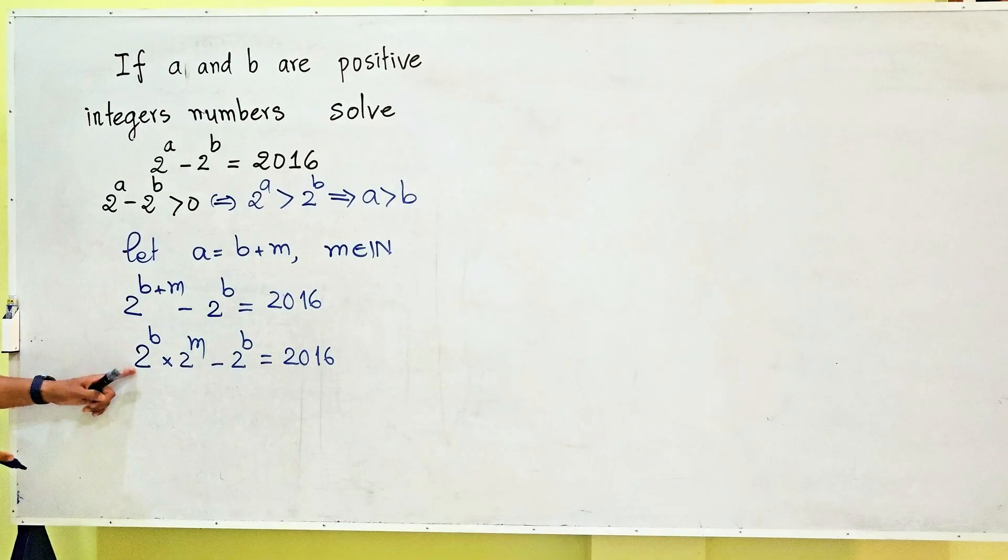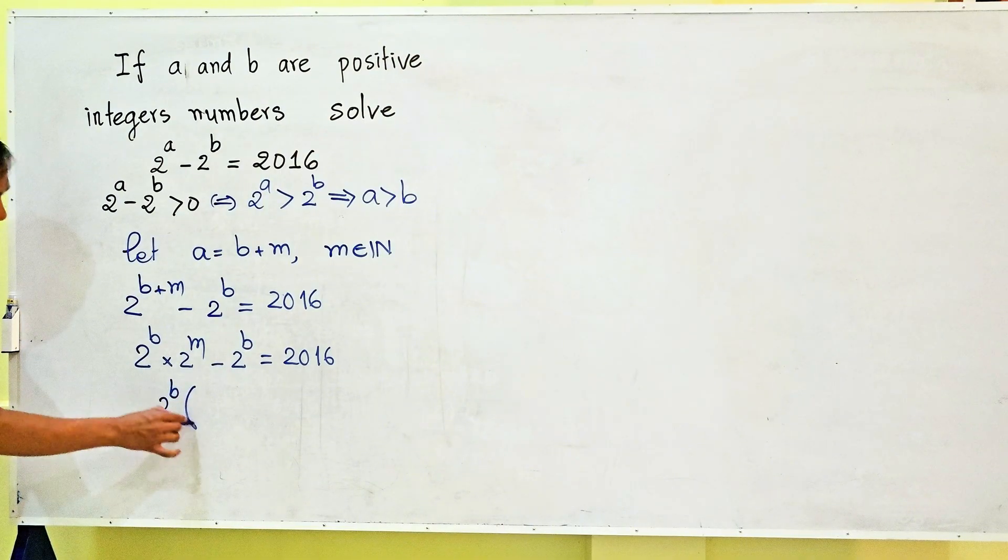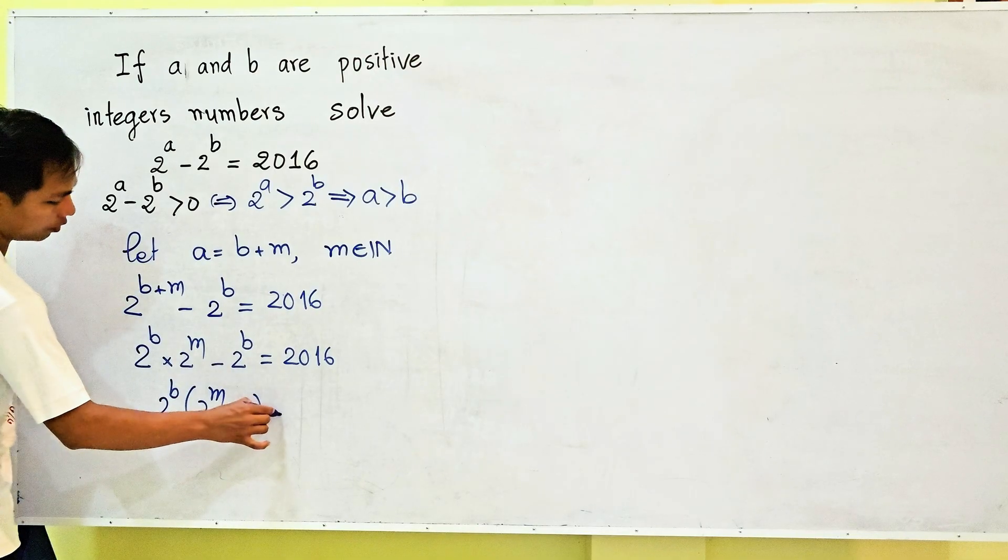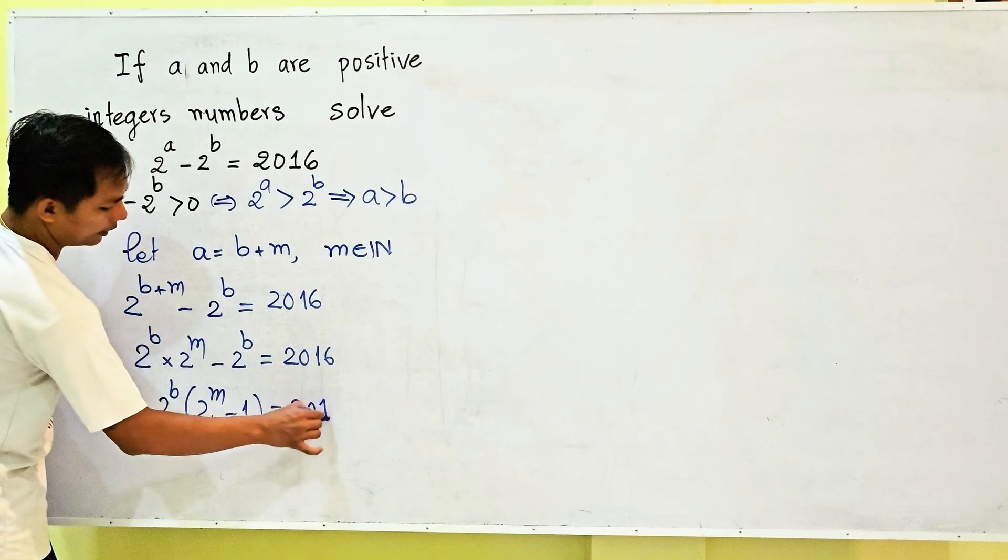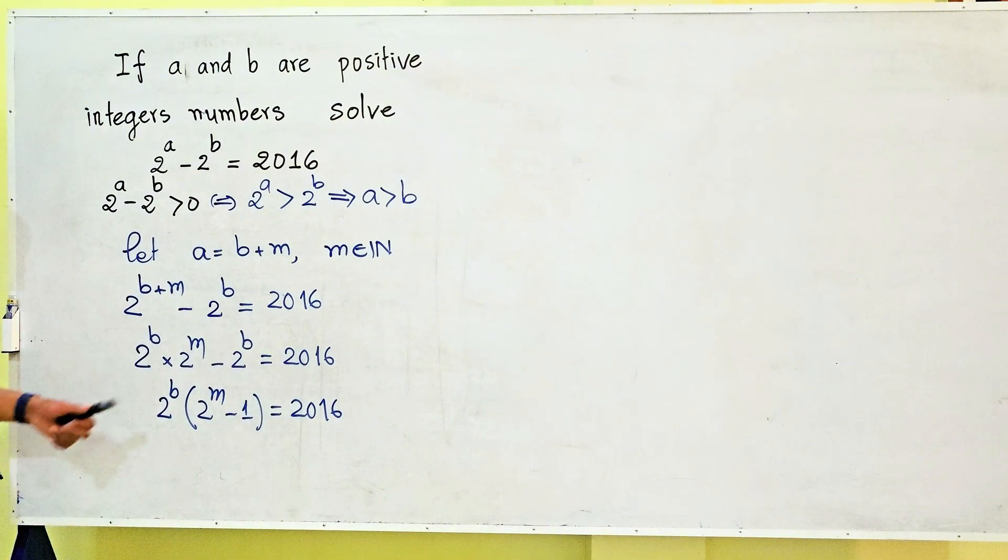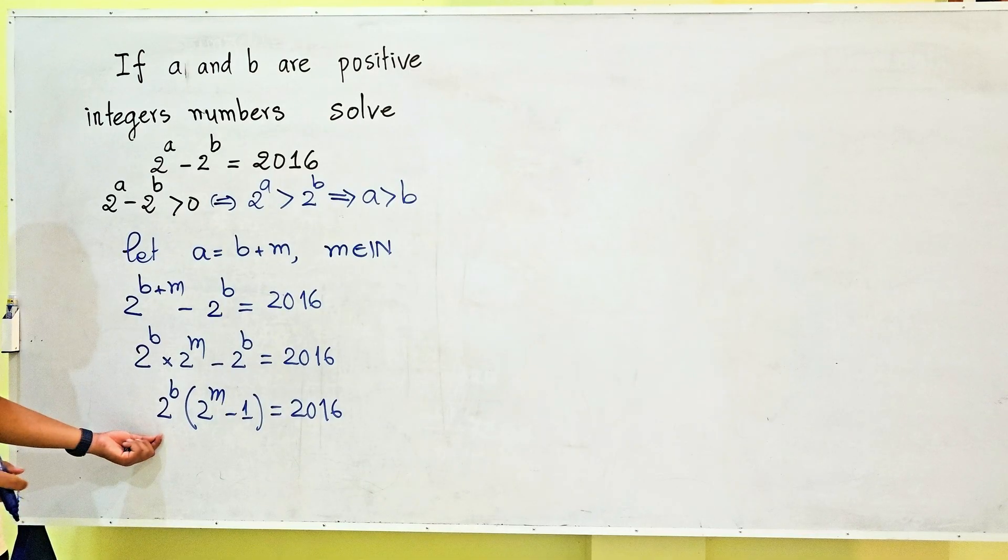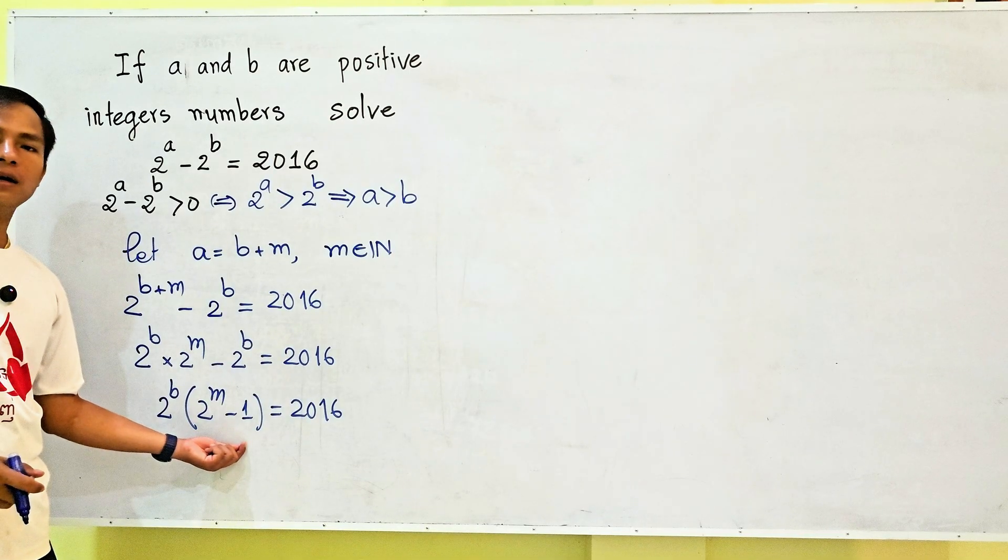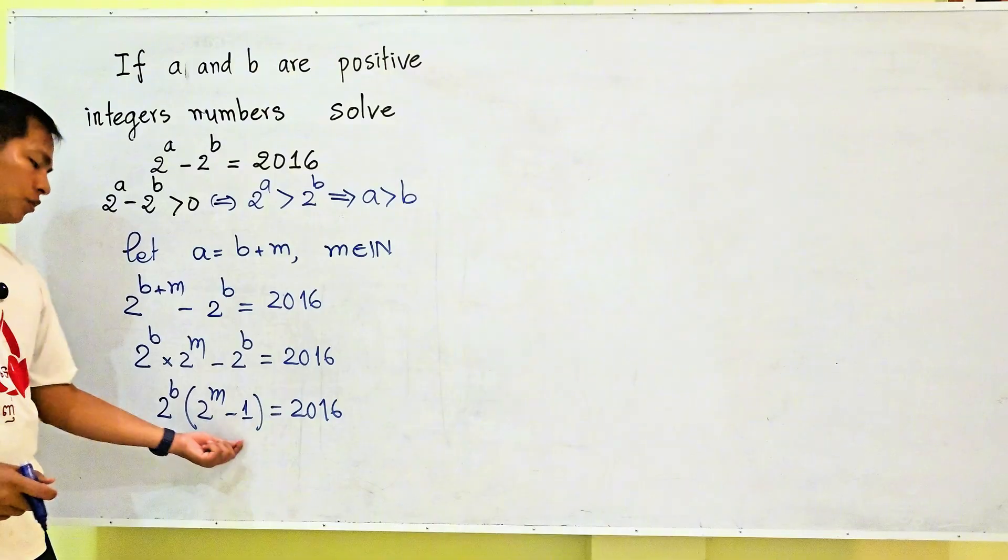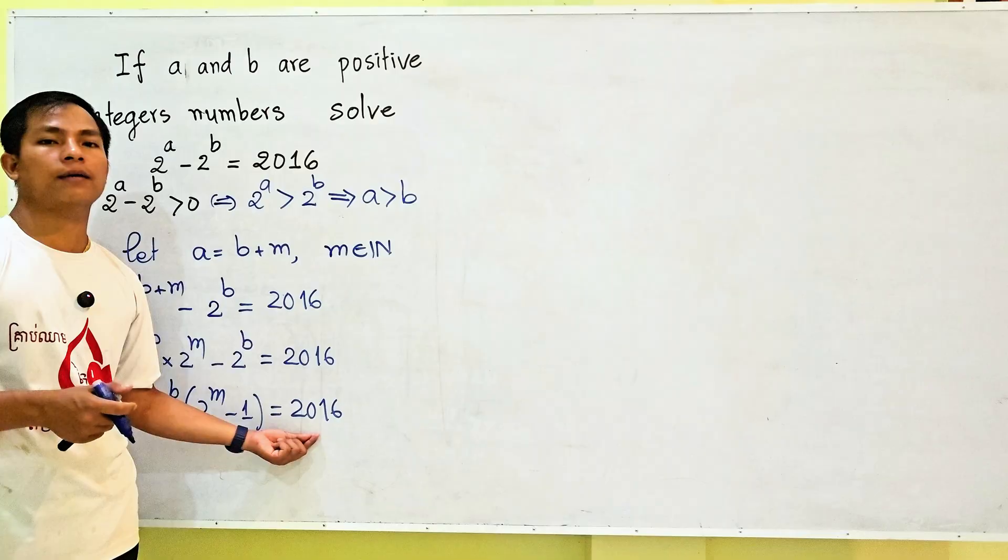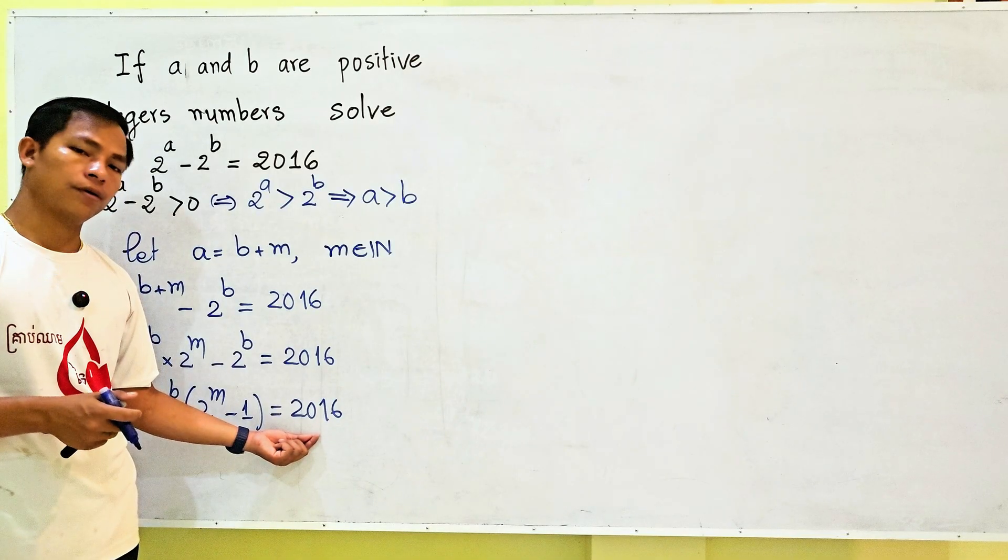Since 2^b is a common factor, we factor it out to get 2^b(2^m - 1) = 2016. Now we need to write 2016 as a product of prime factors. Let me divide it by prime numbers.